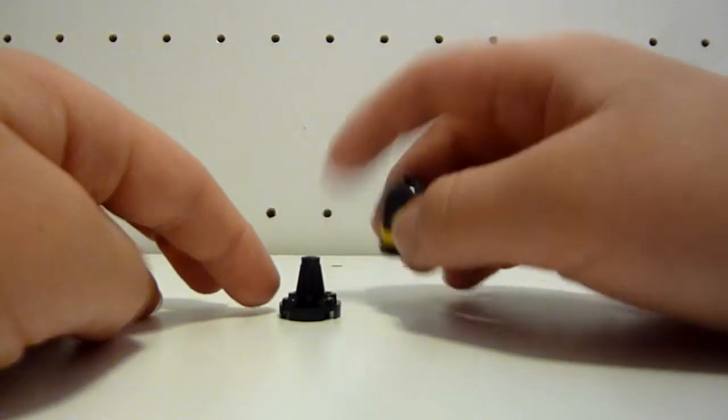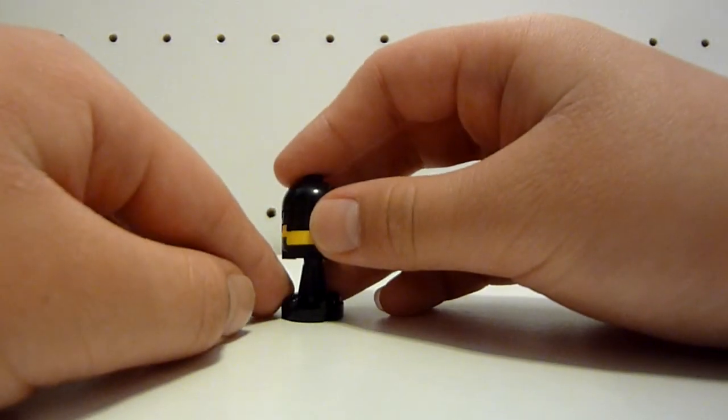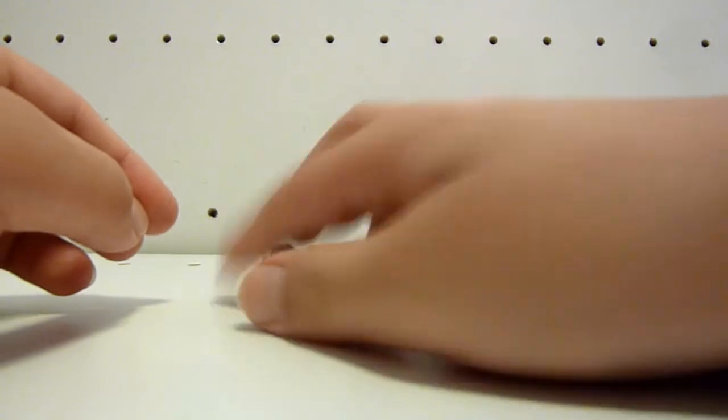And then you take the bottom part, or the tail, and then you just put the top part on top of it, and yeah, you have a little nuke.